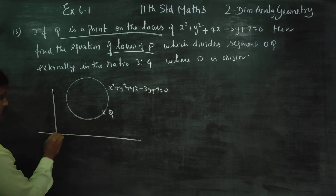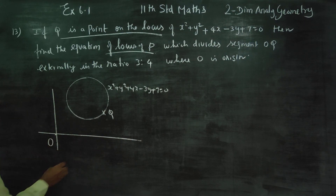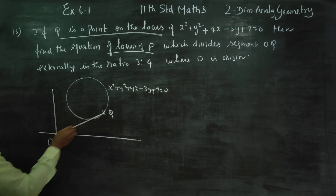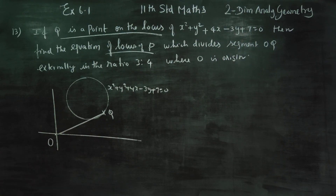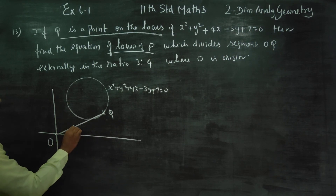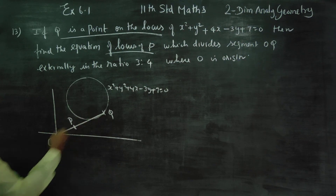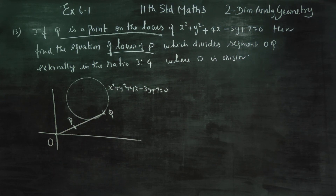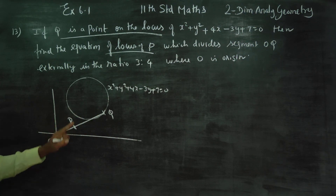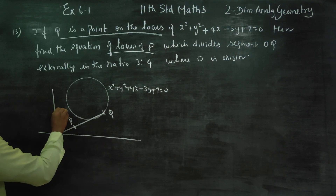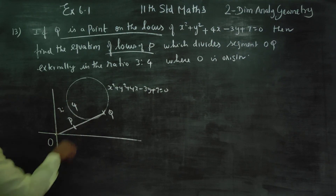Origin is O. OQ is joined. If P is the point, OQ is divided. P is the point such that OQ is divided in the ratio 3 is to 4.